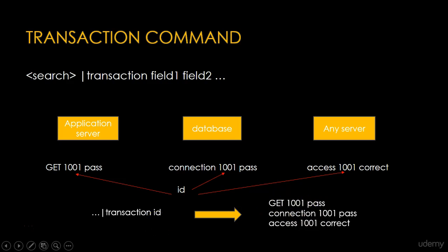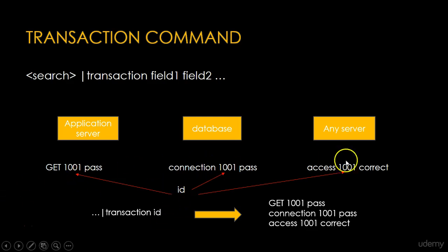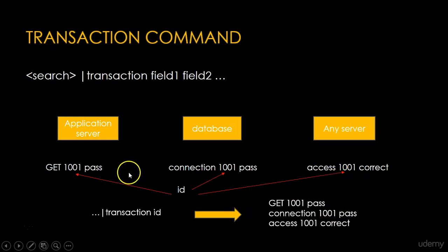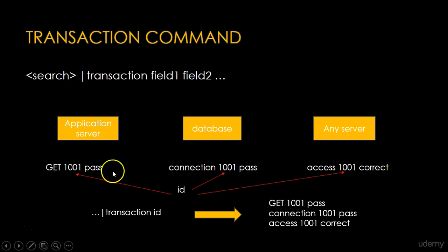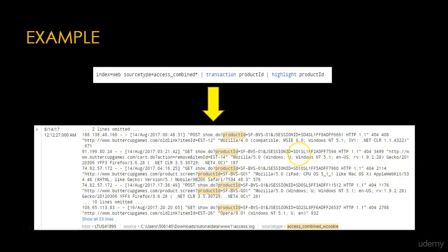It will combine all three different events into a single event and group them based on the ID field value. The ID field value is the same — 1001 — in all three events. So it creates a group with these three events and creates a single event containing all three.